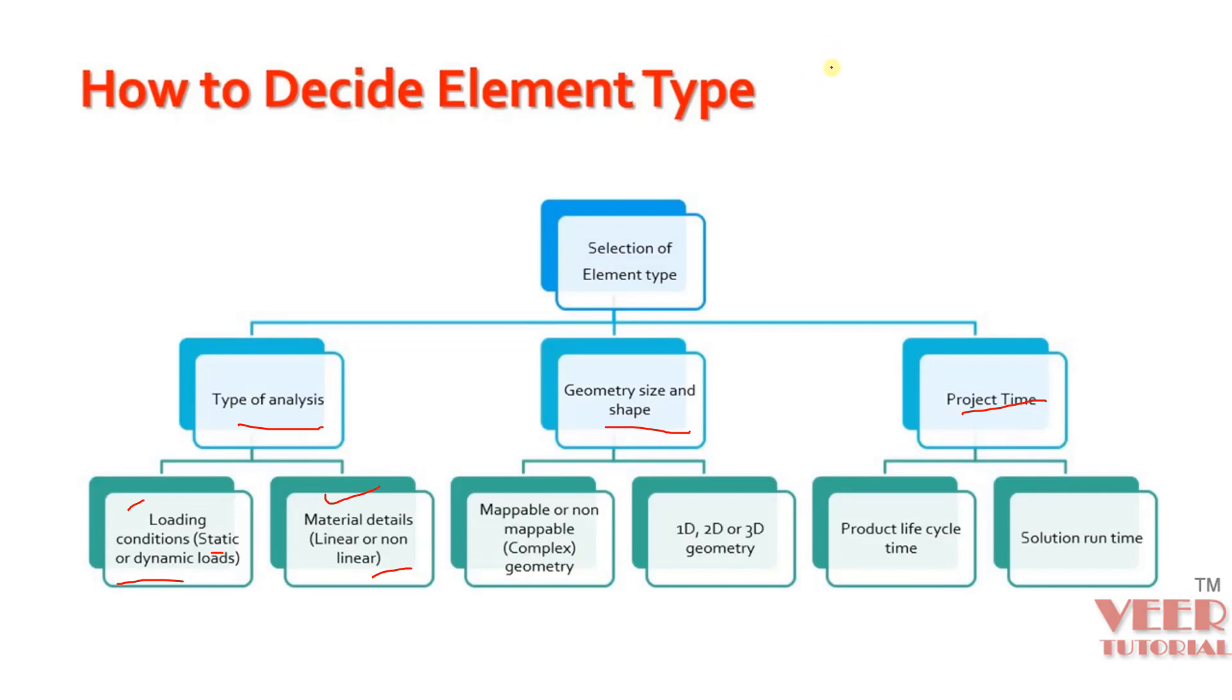In any object, we have three dimensions. Whenever one dimension of the element is very large as compared to the other two dimensions, we are going to use the 1D element. Similarly, when two dimensions are very large as compared to the third dimension, we use 2D element. And when all the three dimensions are comparable, we use 3D element.